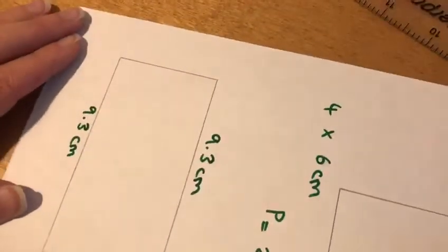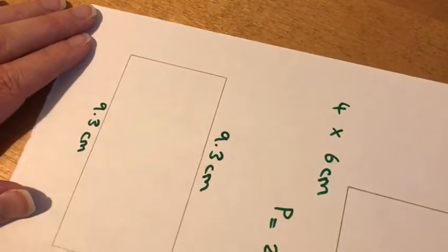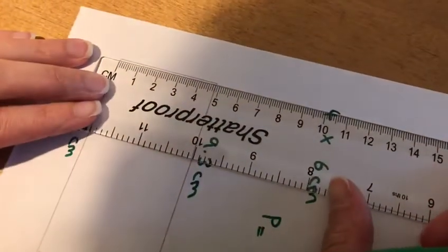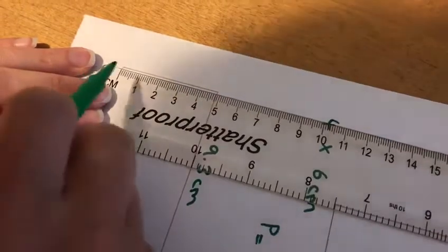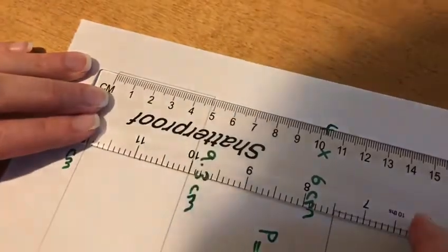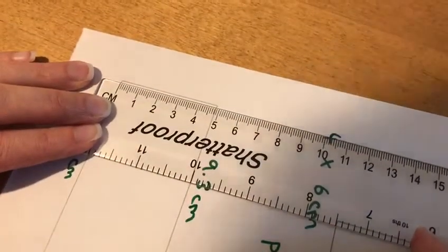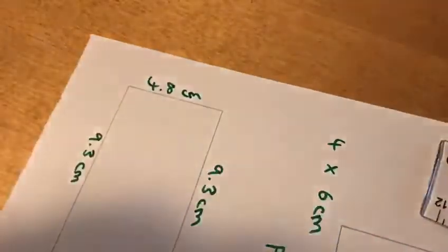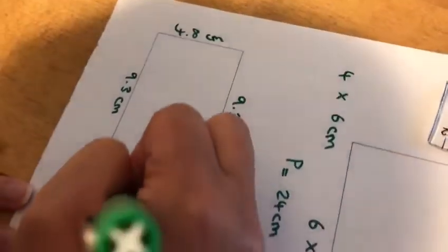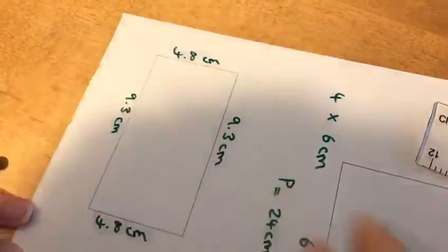If I turn my rectangle around, I can measure the short side, and I can see that it is four whole centimetres and eight millimetres. That would be 4.8 centimetres there and 4.8 centimetres there.